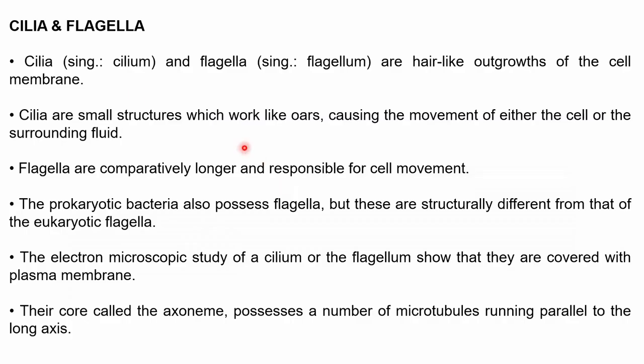The next components are cilia and flagella — hair-like outgrowths of the cell membrane that help in the movement of the cell. Cilia are small structures that work like oars, causing movement of either the cell or surrounding fluid. Flagella are comparatively longer and are responsible for cell movement. Flagella are few in number and prokaryotic bacteria also possess flagella, but these are structurally different from eukaryotic flagella.